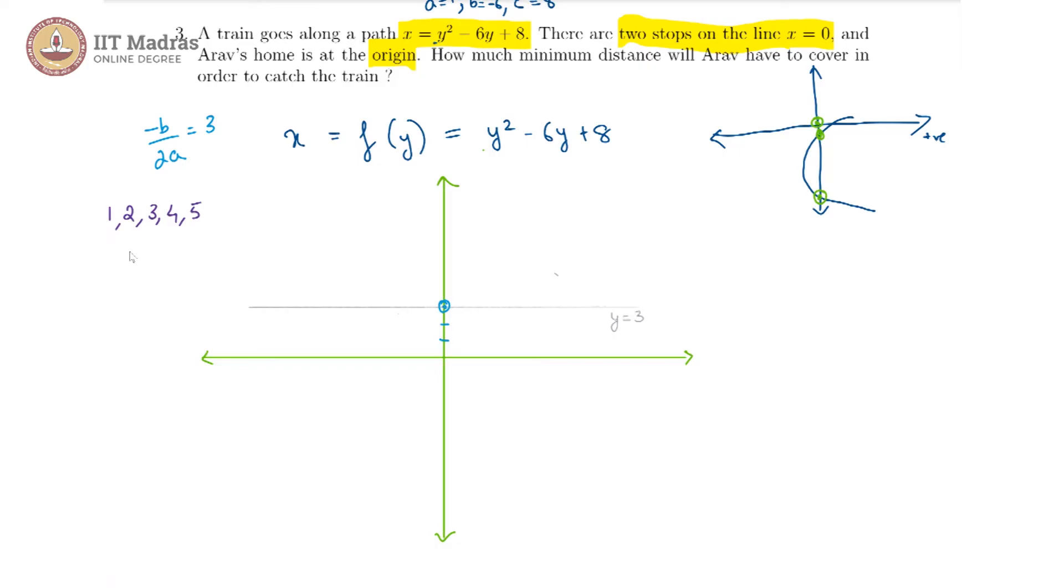f of 3 at the vertex, what is the x coordinate? That would be f of 3 is equal to 9 minus 18 plus 8 which is minus 1.